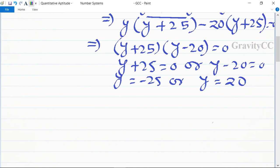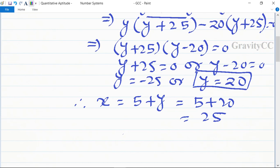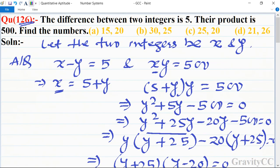So here y is equal to 20. Therefore x is equal to 5 plus y, which is equal to 5 plus 20, equal to 25. So the required integers are 25 comma 20, which is the required answer. Option C is correct.